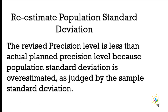The revised precision level is less than the planned precision level because the population standard deviation was overestimated — we estimated 100 but the sample standard deviation was only 90. So now we consider the population standard deviation as 90 and the precision level as 9. This is how we re-estimate the standard deviation as well as the precision level.